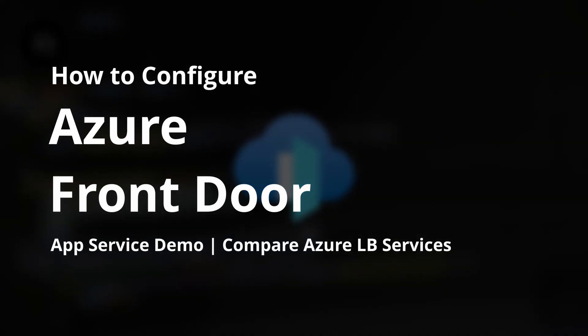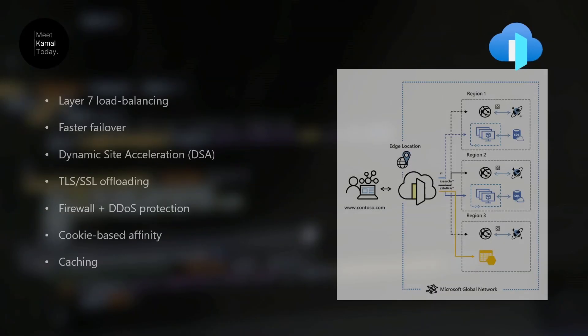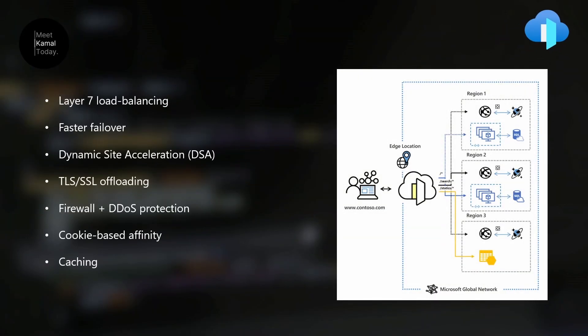Hello everyone. Today we are going to learn about Azure Front Door Service. Azure Front Door is a layer 7 load balancer, meaning that it's an application level load balancer. Basically what you can do with this is that you can make load balancing decisions based on the HTTP request that your front door receives.